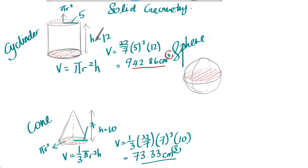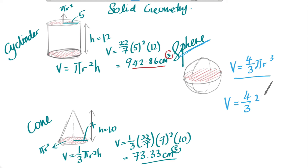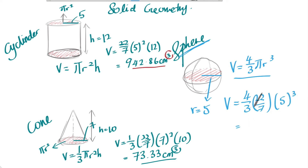The last shape is the sphere. The volume of a sphere is 4 over 3 pi r cubed. You have to remember this formula yourself — don't count on the data sheet. Replace pi with 22 over 7, and if given r is 5, substitute r as 5, press your calculator and you'll get 523.81 cm³.